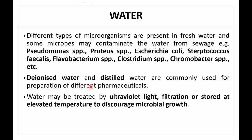Deionized water and distilled water used for pharmaceutical preparations can be a source of contamination. This can be treated by ultraviolet light, filtration, or storing at elevated temperature to discourage microbial growth. The best methods are filtration and elevated temperature storage — for example, water for injection is stored at 80 degrees Celsius.